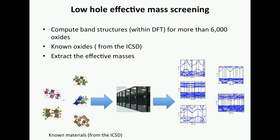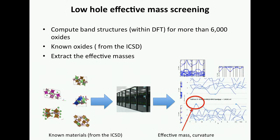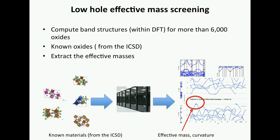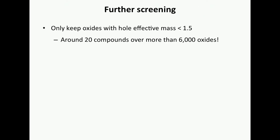Band structures are not the most difficult thing to automate in terms of workflows. We built a workflow that basically gives you a DFT band structure for any material. If you have the band structure, you can extract an effective mass. You can have different definitions of effective mass — if you're interested, look at our papers. There are challenges, for instance, if you have several bands: which bands do you take? You take the 6,000 materials and you have this database of effective masses, and you can start screening. Give me the very low hole effective mass. From 6,000, you end up with around 20.